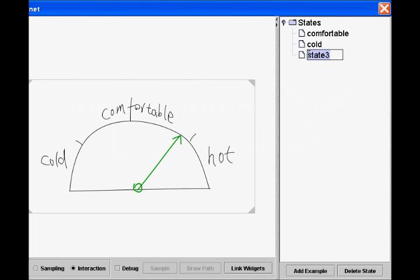Then the designer adds three states: comfortable, cold, and hot. For each of the three states, the designer drags the dial needle to a position corresponding to a state and adds an example of that state.